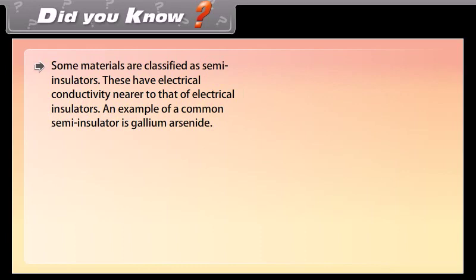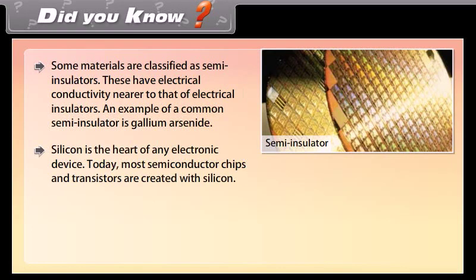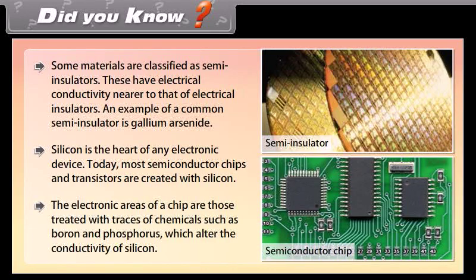Did you know? Some materials are classified as semi-insulators, which have electrical conductivity nearer to that of electrical insulators. An example of a common semi-insulator is gallium arsenide. Silicon is the heart of any electronic device. Today, most semiconductor chips and transistors are created with silicon. The electronic areas of a chip are treated with traces of chemicals such as boron and phosphorus, which alter the conductivity of silicon.